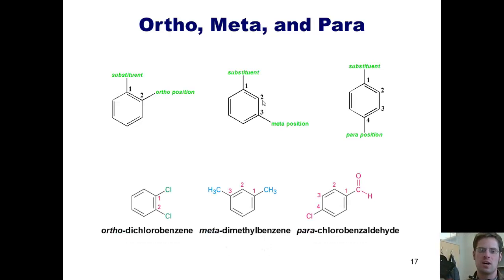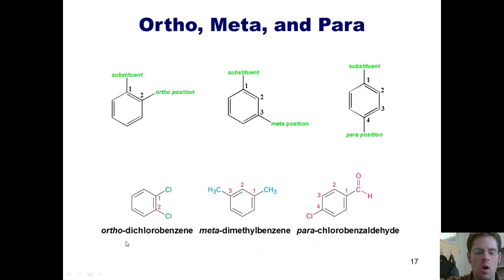Thus, we could call these compounds ortho-dichlorobenzene, because the two chlorines are ortho to each other, meta-dimethylbenzene, because the two methyls are meta to each other, and para-dichlorobenzaldehyde, because the two substituents are para to each other.